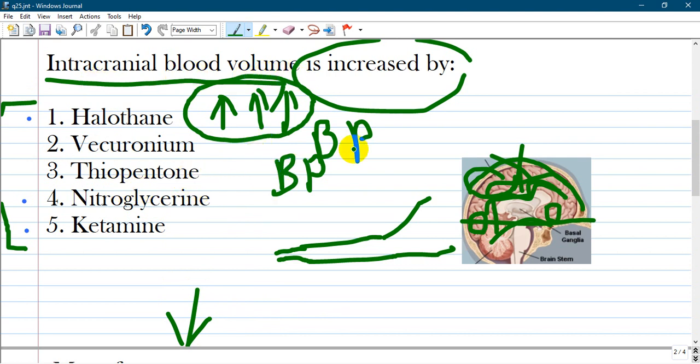Nitroglycerin has a special effect on circulating blood volume as it dilates specifically the intracranial vessels and of course increases blood volume and circulation through the vessels of the brain.